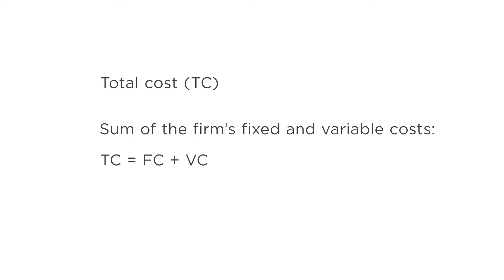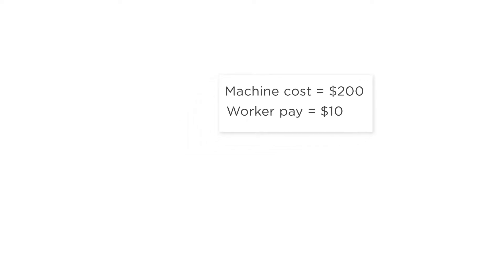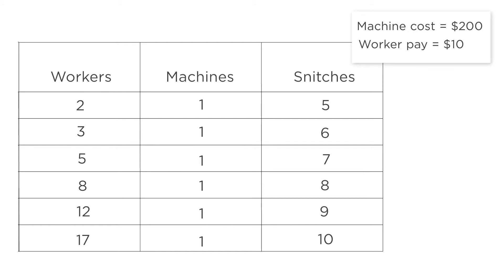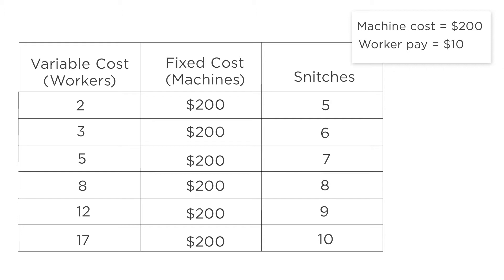Total cost is the sum of the firm's fixed and variable costs. Let's imagine that the machine used to produce golden snitches costs $200 and that each worker gets paid $10. This table shows how many workers and machines it takes to make a certain number of snitches. In the short run, the snitch factory cannot buy more machines, so the $200 spent on the existing machine is the fixed cost, no matter how many snitches it produces. But the factory can hire or fire workers, so the labor cost in each case is the variable cost. When there are two workers, the variable cost is $20; when there are three workers, the variable cost is $30, and so on.